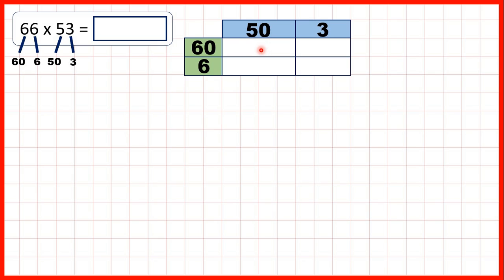Now we need to fill in our grid. For this box here, we need to work out 60 times 50. That's 3000, because 6 times 5 is 30. But after we've written the 30, because there are two end zeros in the question, we need two end zeros in the answer after we've multiplied 6 by 5 to get 30.